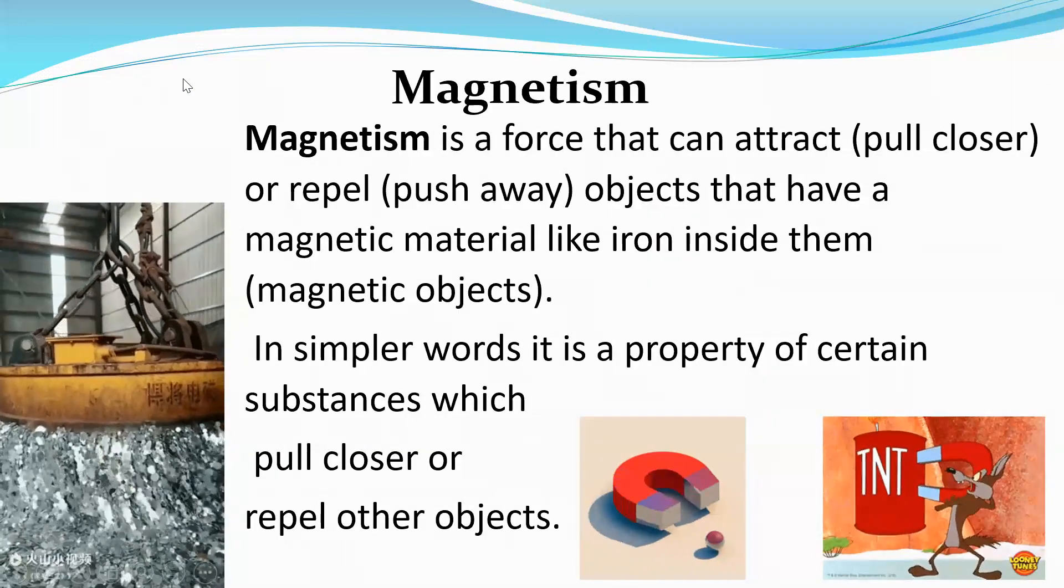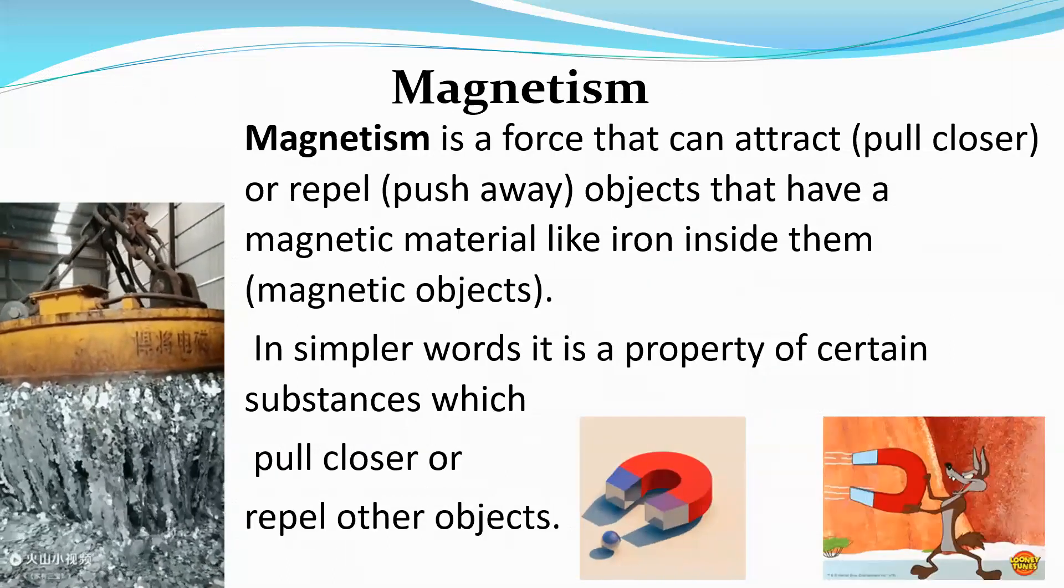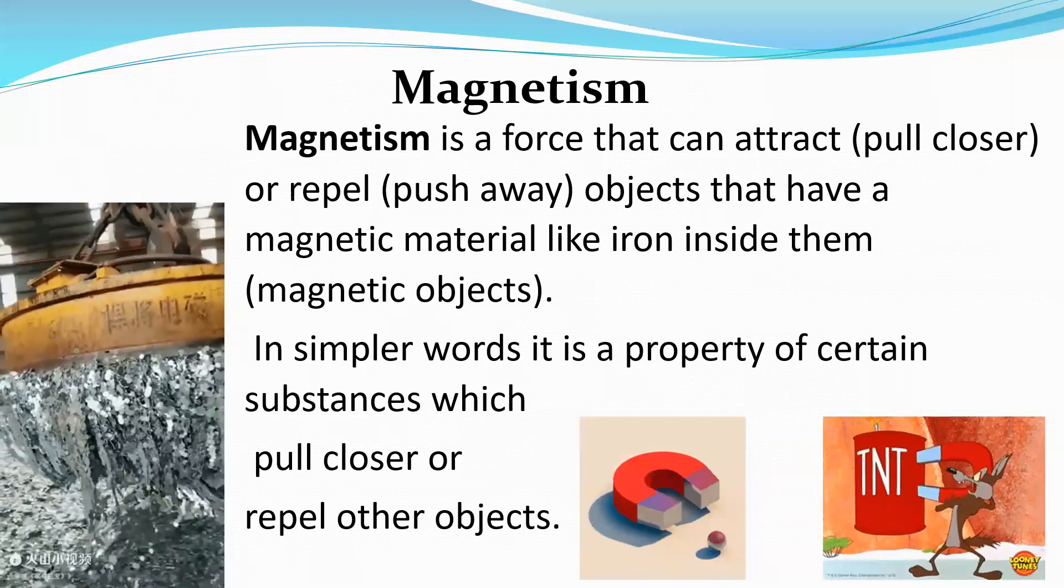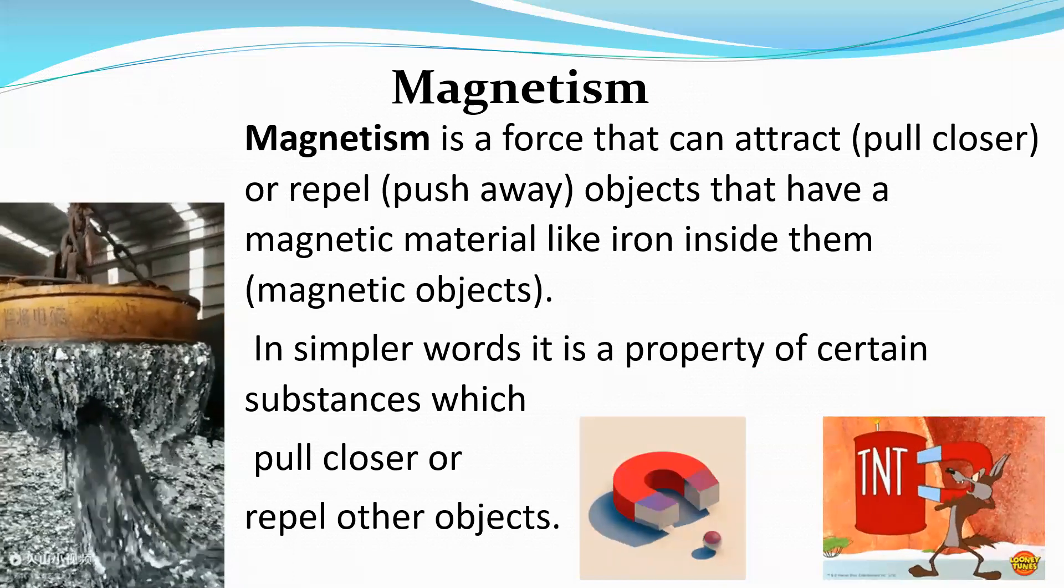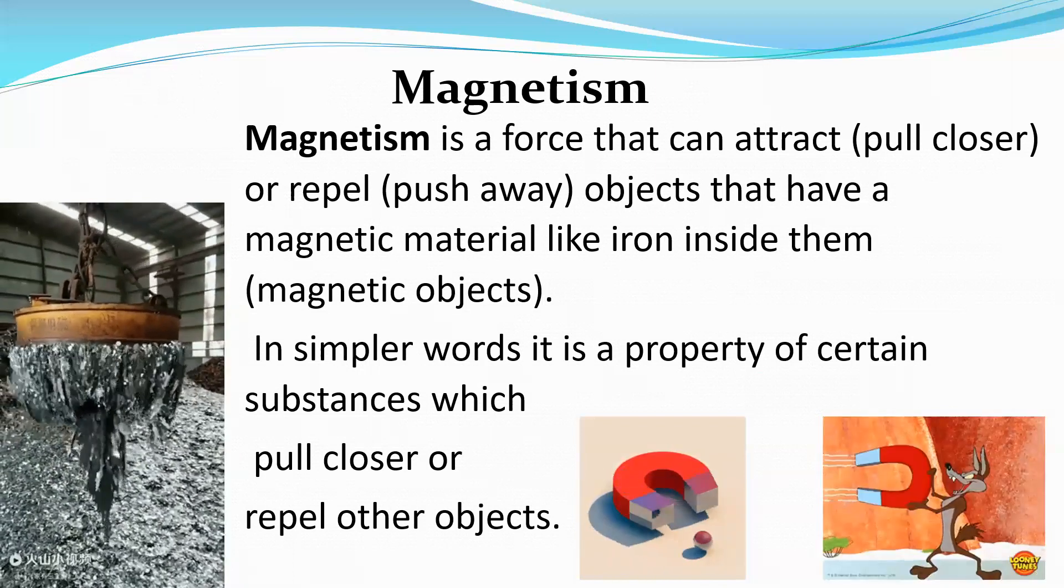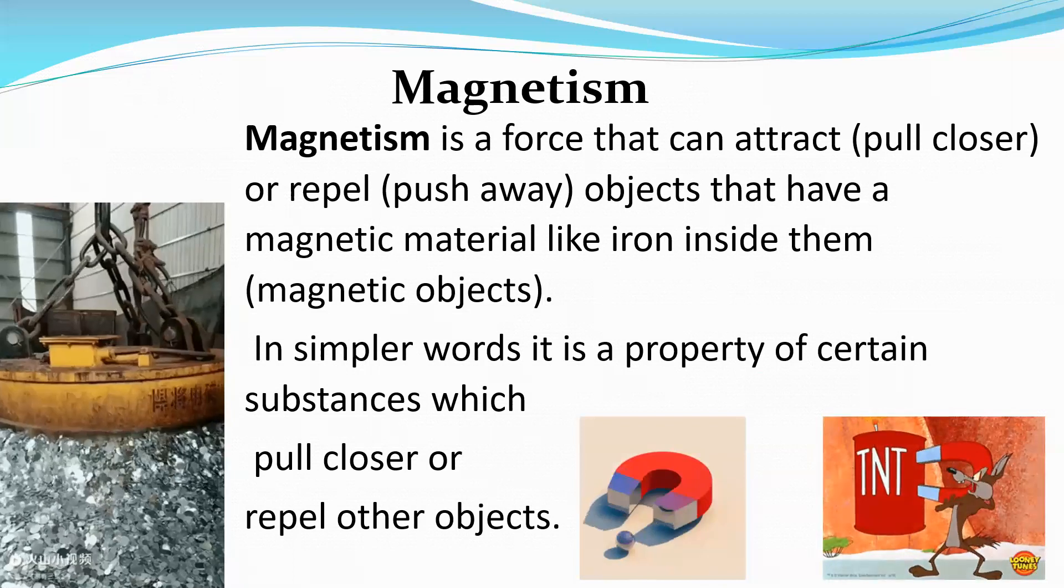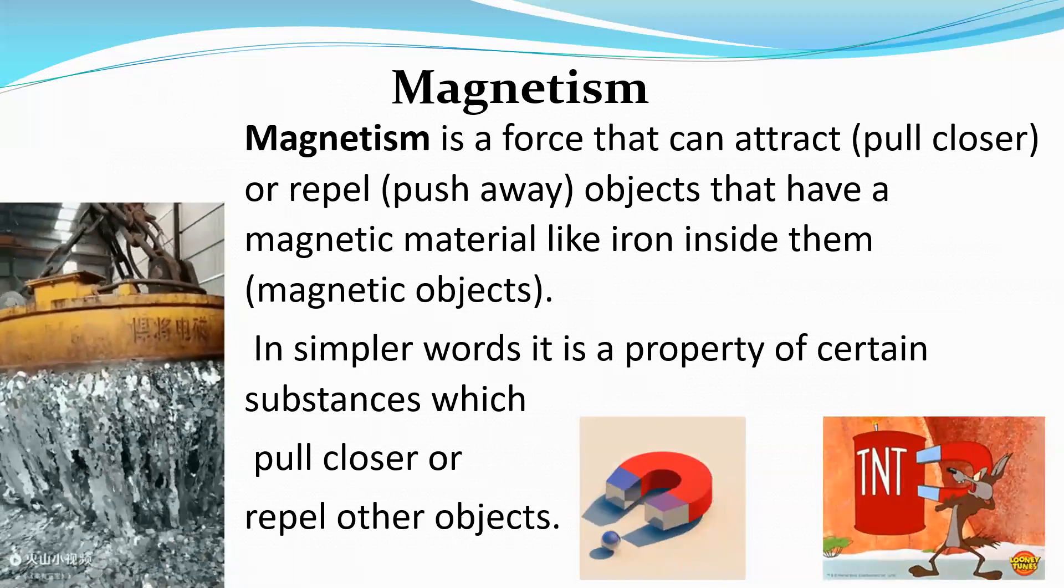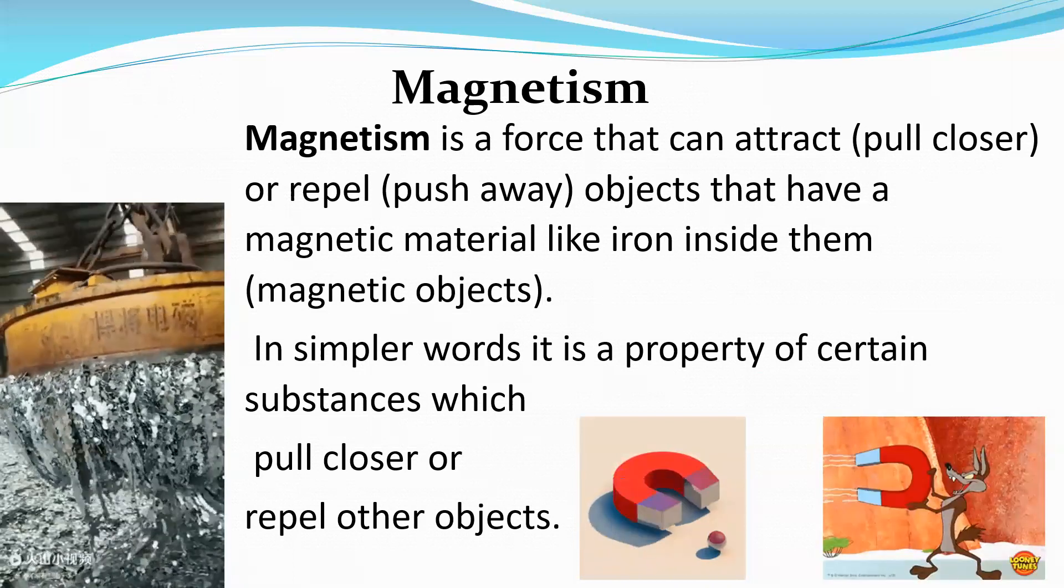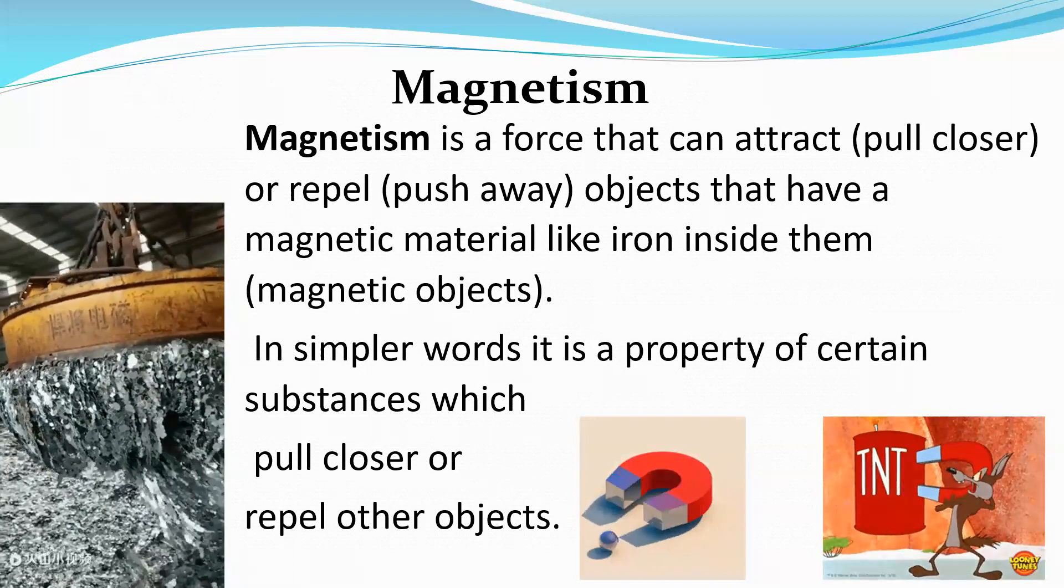Then we have magnetism. Magnetism is a force that can attract or pull closer or repel, which means push away, objects that have a magnetic material, like iron inside of them. In other words, magnetic objects. In simpler words, it is a property of certain substances which pull closer or repel other objects.